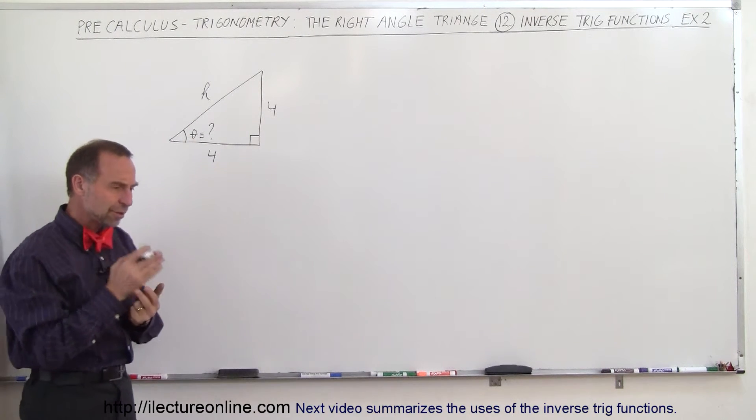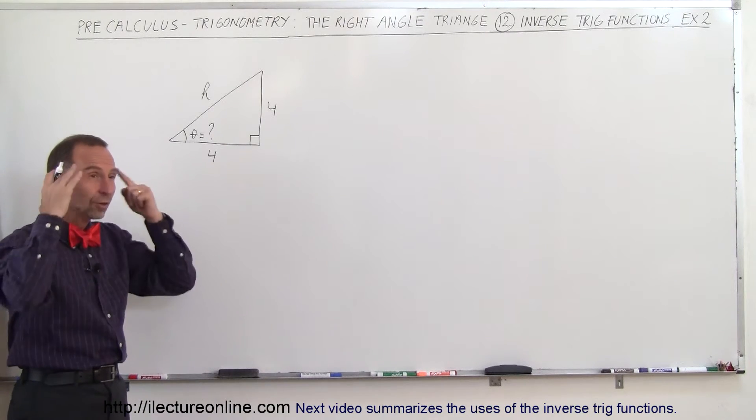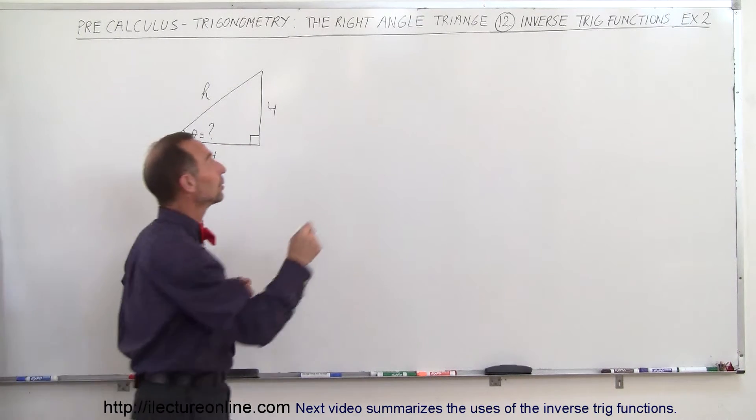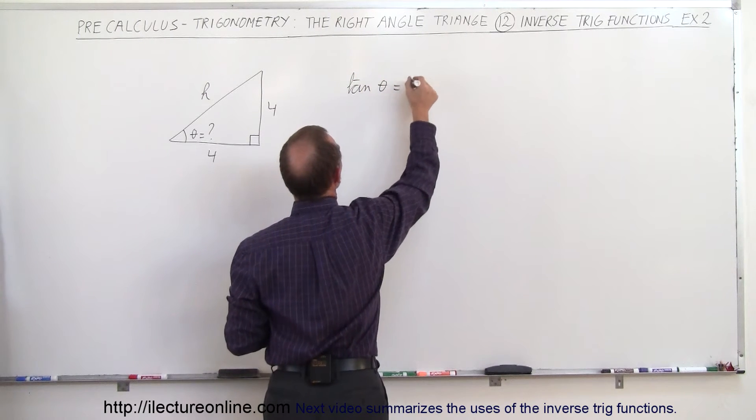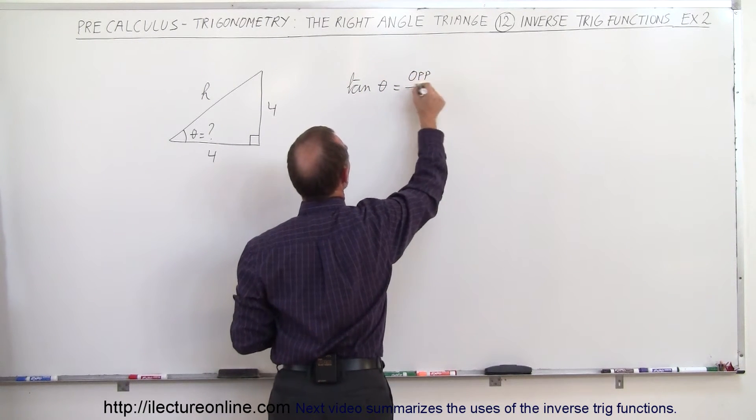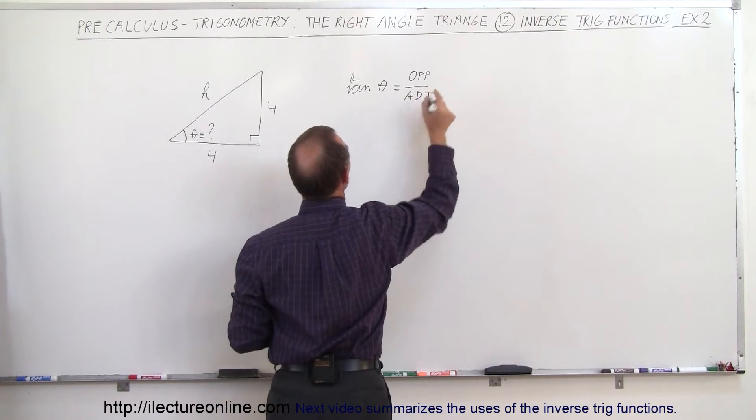Remember, what trigonometric function relates the opposite side to the adjacent side? That's the tangent of theta. The tangent of theta is equal to the ratio of the opposite side divided by the adjacent side.